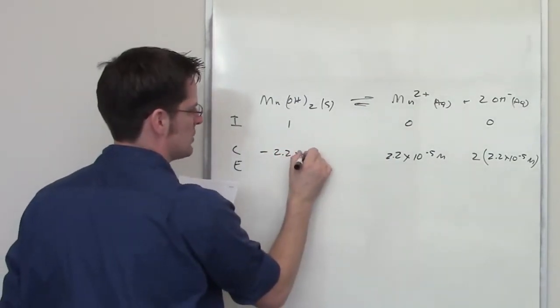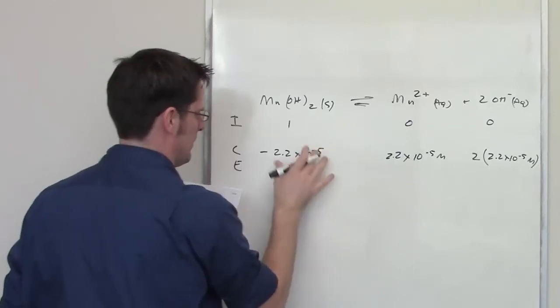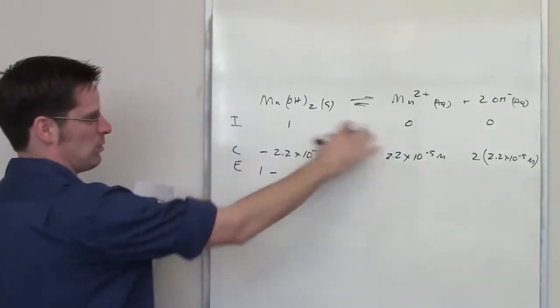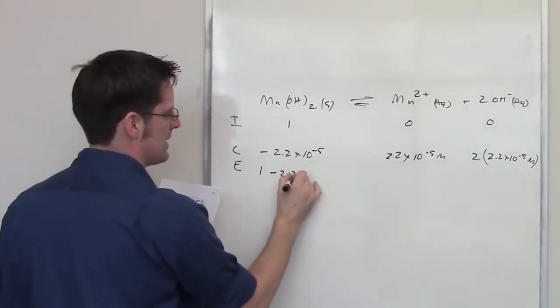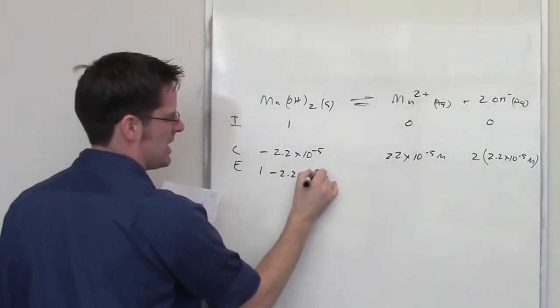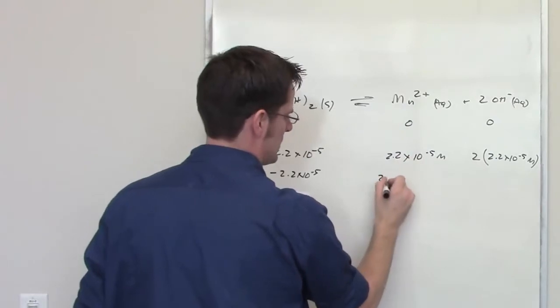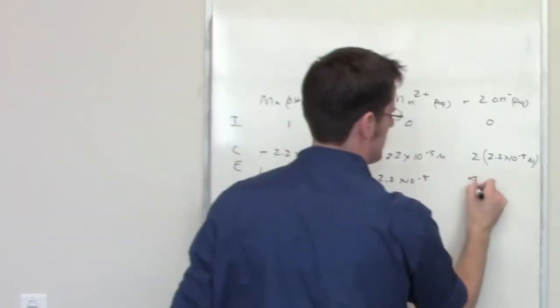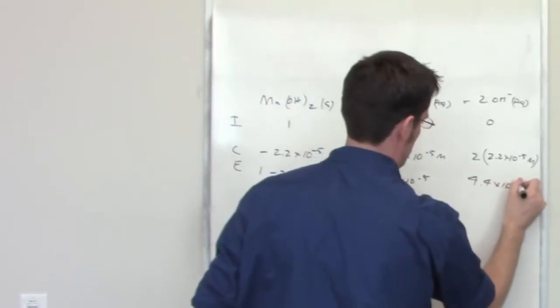Minus 2.2 times 10 to the negative fifth. The final answer for these equilibrium settings is going to be made by just adding row one to row two. So 1 minus 2.2 times 10 to the negative fifth there, and then 0 plus this amount, 2.2 times 10 to the negative fifth, and then 2 multiplied by that, it's going to be 4.4 times 10 to the negative fifth molar.